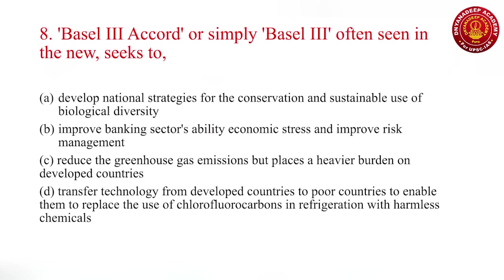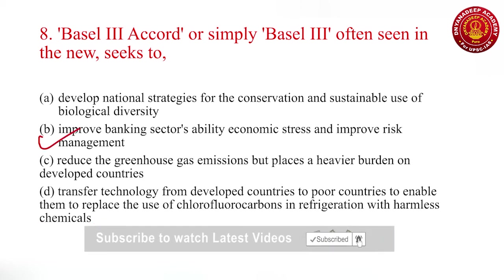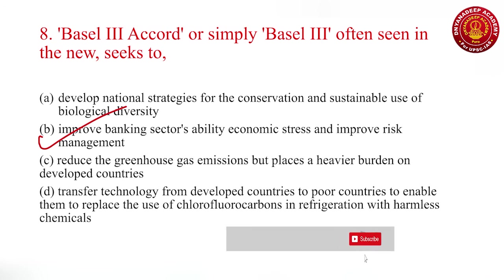The last question — question eight — concerns Basel 3 Accord, or Basel 3 norms, often seen in the news. The options involve: developing national strategies for conservation of biological diversity; improving the banking sector's ability to withstand economic stress and improve risk management; reducing greenhouse gas emissions placing a heavier burden on developed countries; or transferring technology to replace chlorofluorocarbons in refrigeration. This is a straightforward question — it is about banking. The correct answer relates to improving banking sector ability to withstand economic stress. Today's test has been smaller and questions straightforward. We will go for more difficult questions in days to come. Thank you very much. Have a good day.